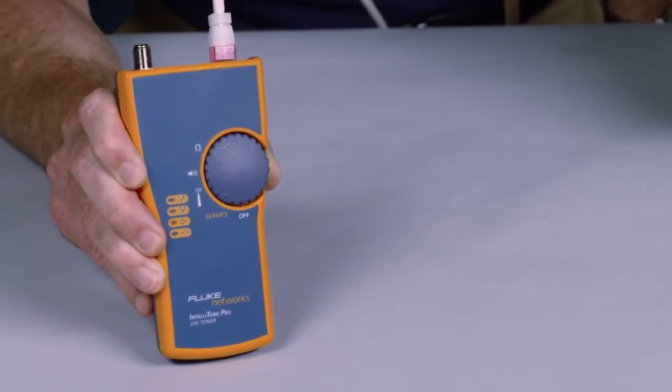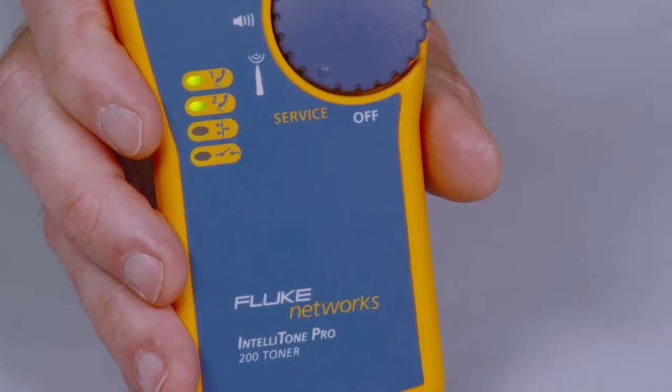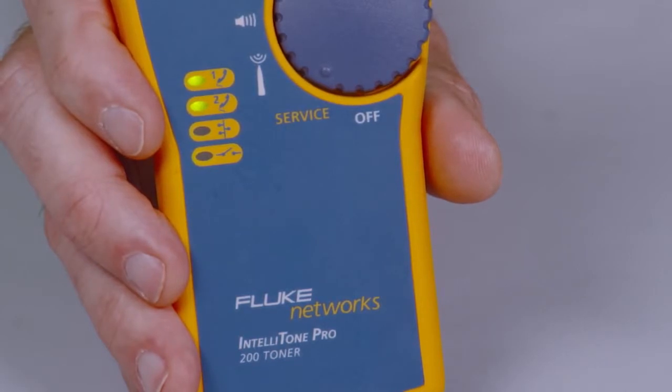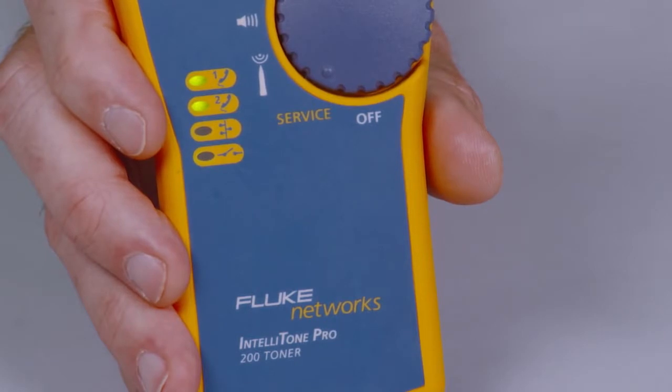Use the 100 to detect line 1 voltage, polarity, and ring. The IntelliTone Pro 200 adds line 2 troubleshooting. Confirm telecom circuits with the built-in talk battery capability and validate telephone service and polarity.